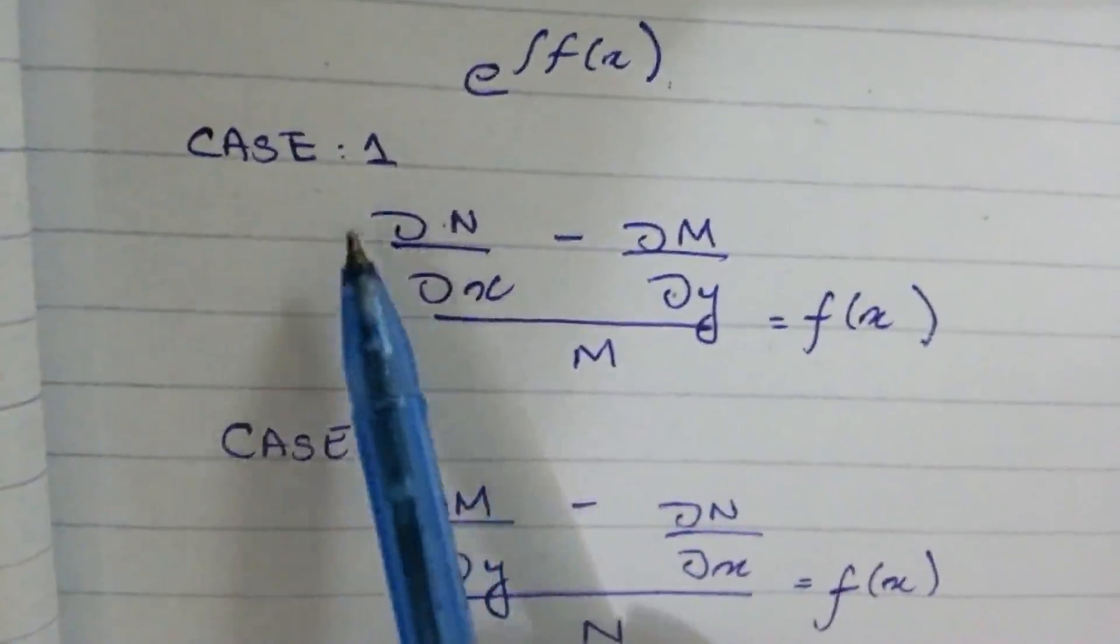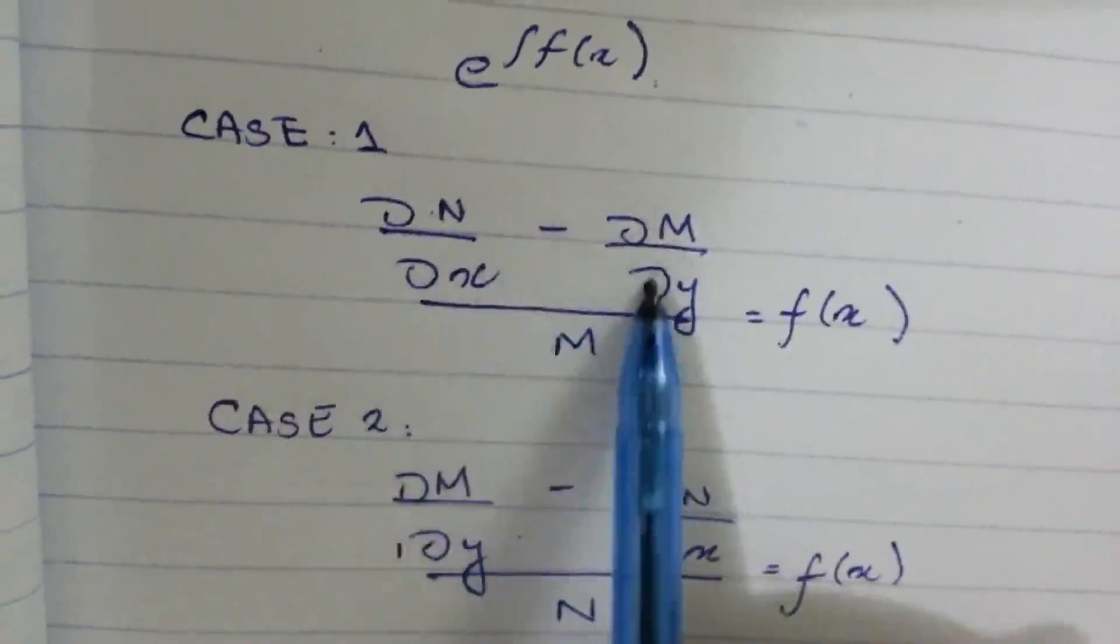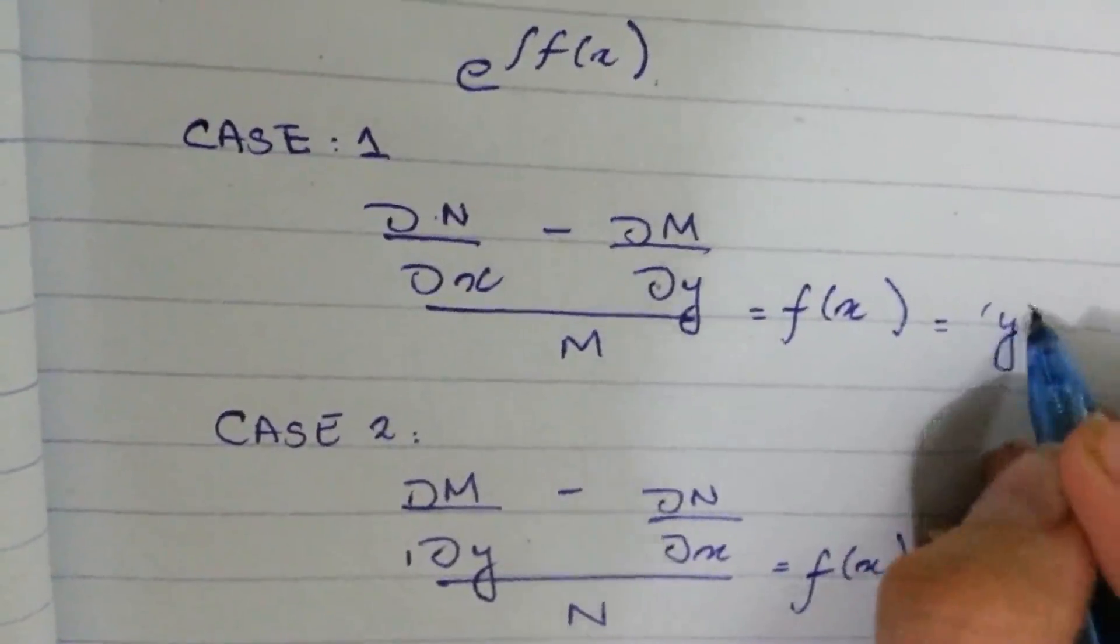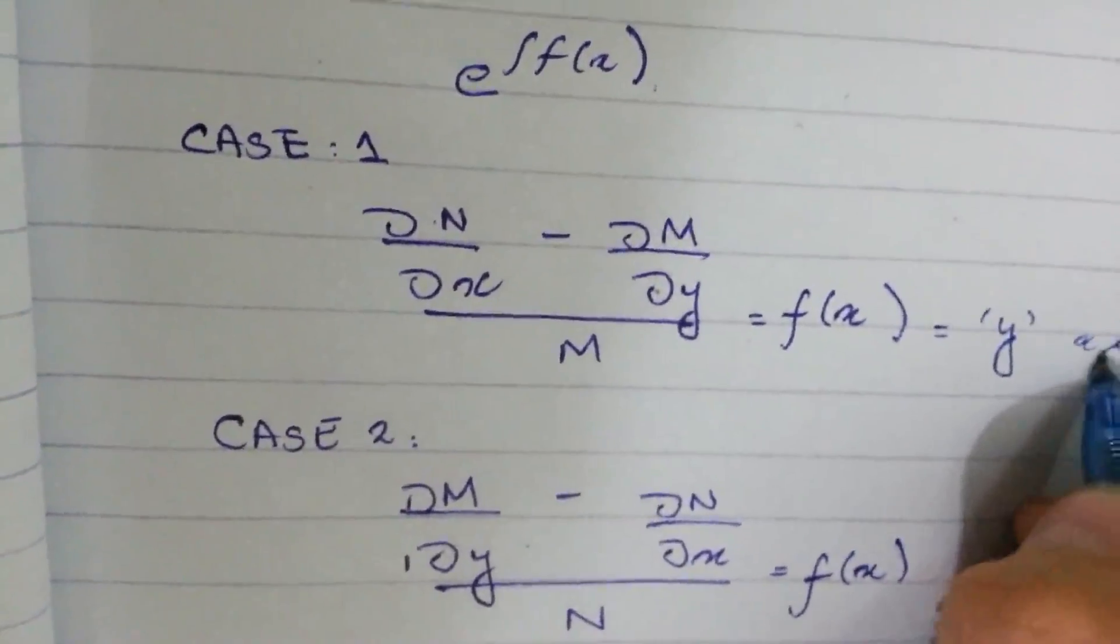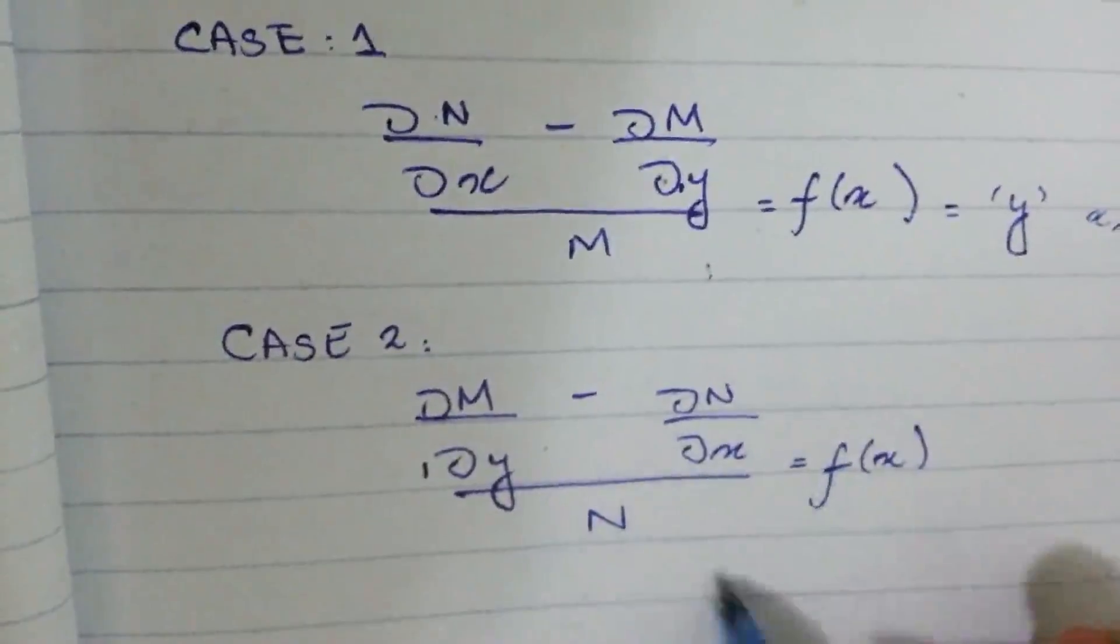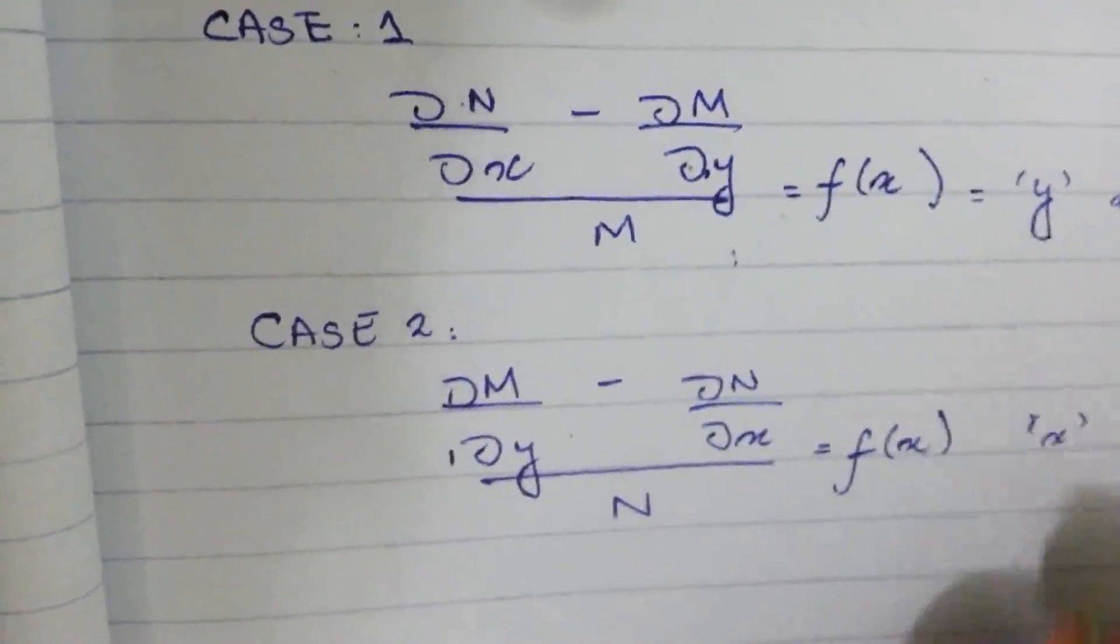How do we know which case to apply? It's simple. If after solving Case 1, the answer is only in terms of y, then that rule is applicable. If the answer of Case 2 is only in terms of x, then that rule is applicable.